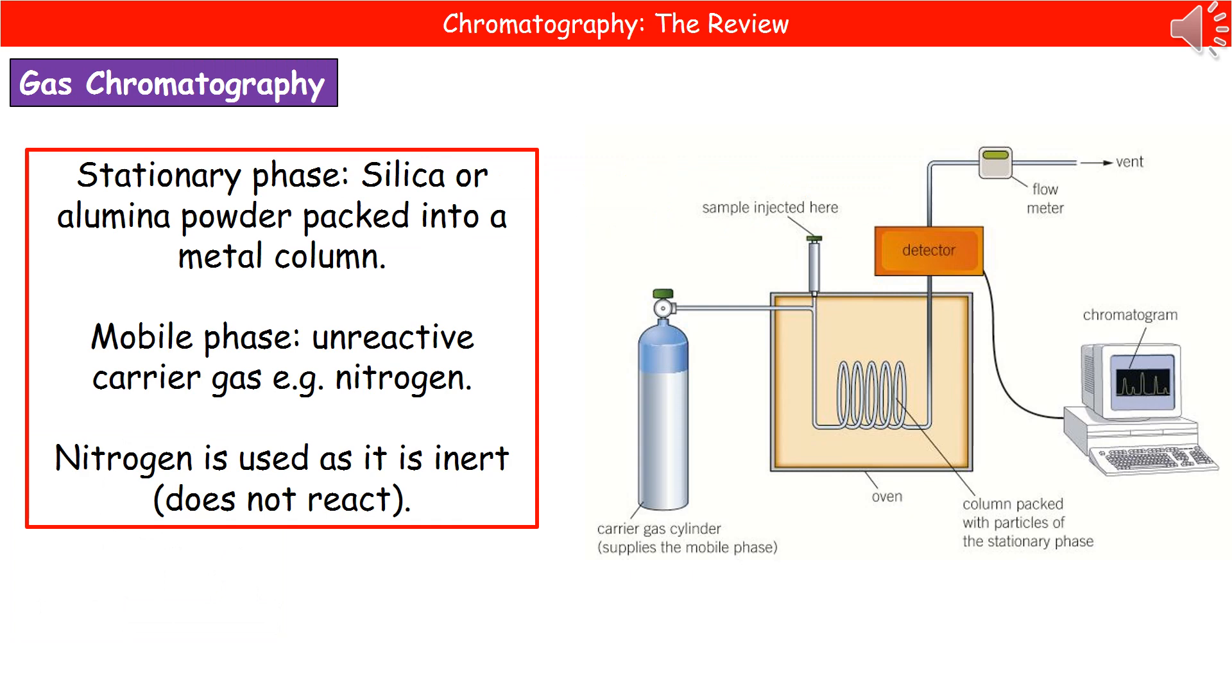The last type of chromatography we need to know about is gas chromatography. What we find here, we still have our stationary and our mobile phases. The stationary phase is silica or alumina powder, which is packed into a metal column, which you can see in the middle of the diagram on the right there.